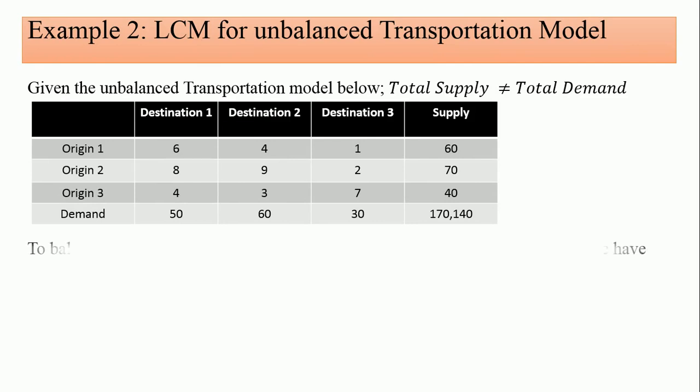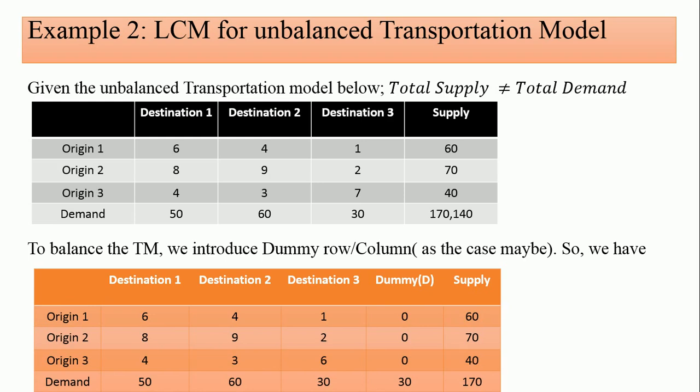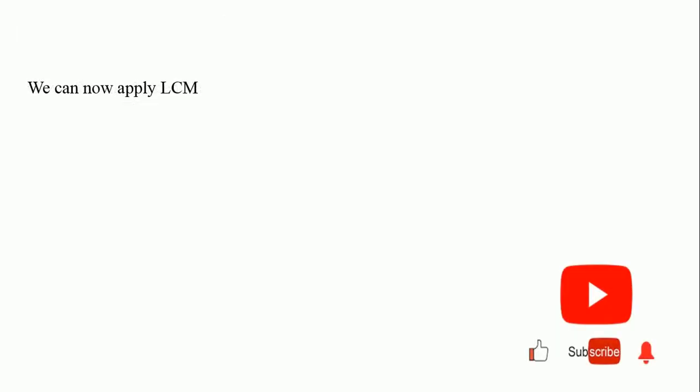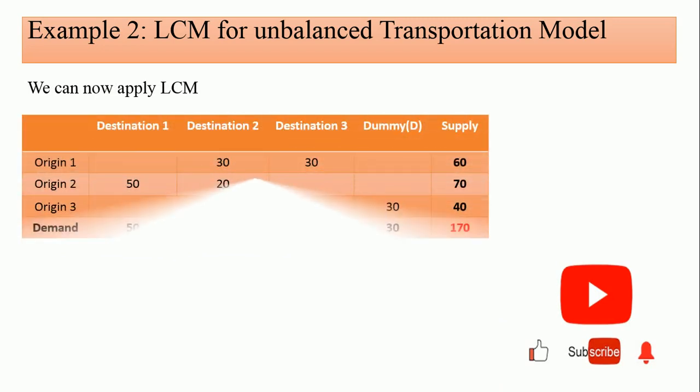This unbalanced situation, we make it balanced. In the first place, you have to make it balanced, then you apply the LCM. After we have been able to apply the LCM, we have this, and you can see what we have looks colorful. Following the previous pattern, determine the smallest unit cost.